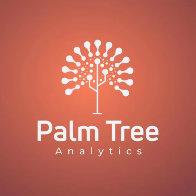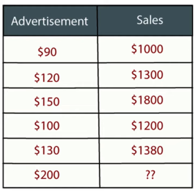Regression analysis is a statistical method to model the relationship between a dependent (target) and independent (predictor) variables with one or more independent variables. More specifically, regression analysis helps us to understand how the value of the dependent variable is changing corresponding to an independent variable when other independent variables are held fixed.